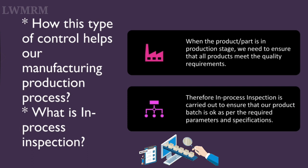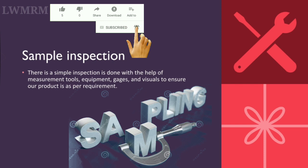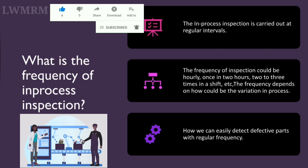What is in-process inspection? When the product part is in the production stage, we need to ensure that all products meet the quality requirements. Therefore, in-process inspection is carried out to ensure that our product batch is okay as per the required parameters and specifications. A simple inspection is done with the help of measurement tools, equipment, gauges, and visuals to ensure our product is as per requirement.